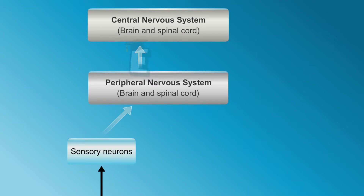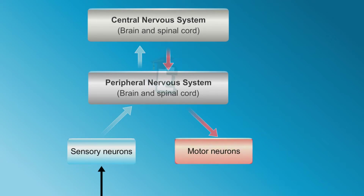The central nervous system processes the data and gives instructions that are forwarded through the peripheral nervous system to the motor neurons.